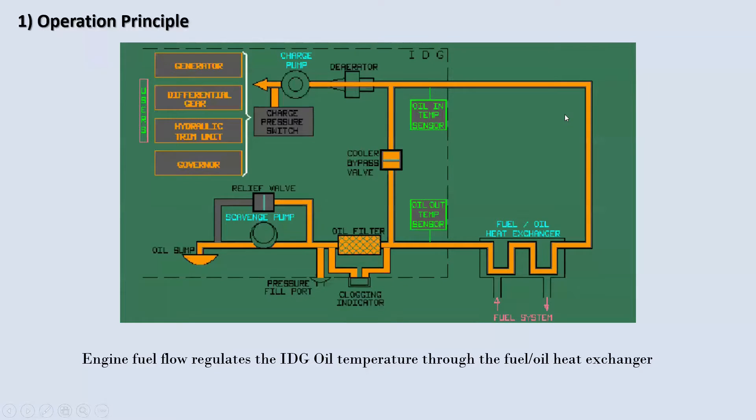Let's go to the first one, operational principle. You can see the graph, this is the full oil system. You can see over there the relief valve, the scavenge pump, and over here is the oil filter. This is the clogging indicator, and here is the fuel/oil heat exchanger. We will talk about the components step by step and what is the purpose. Here are the oil temperature sensors, this is the cooler bypass valve, and here the de-aerator.